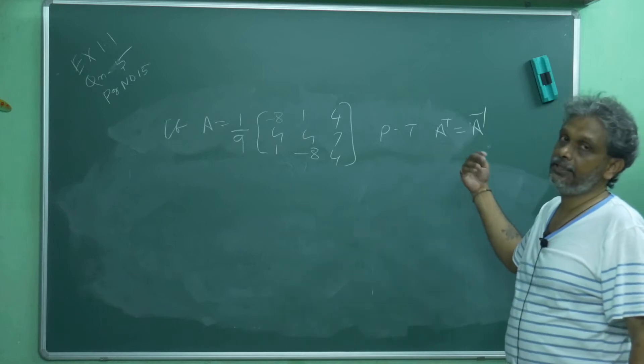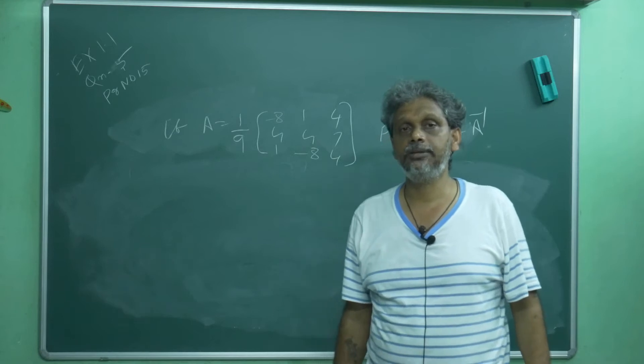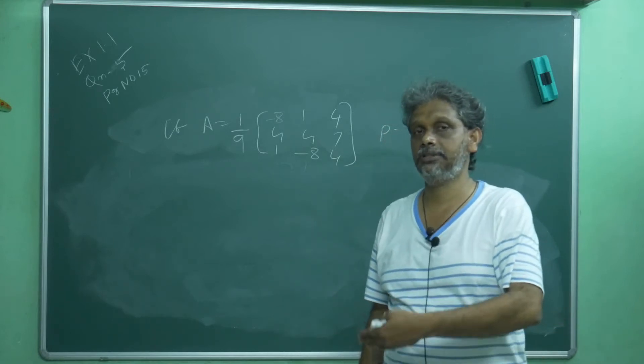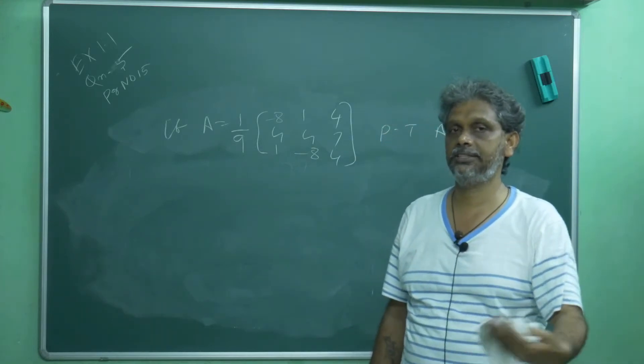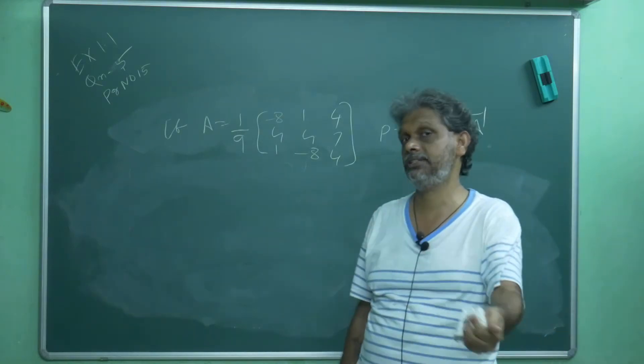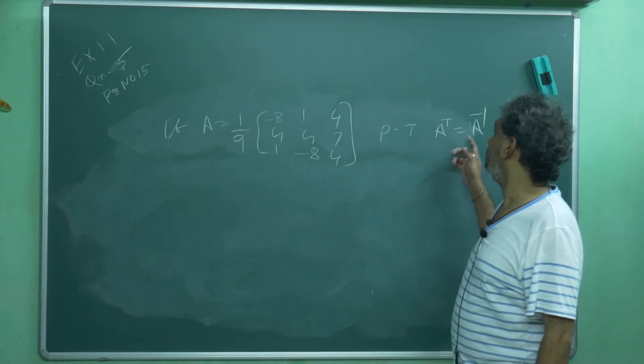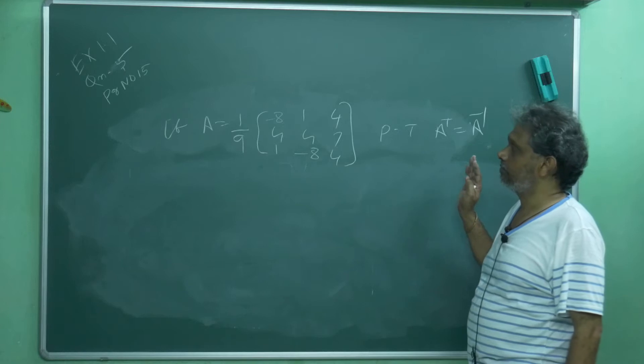A transpose is itself A inverse. The inverse definition is: A B is equal to I means B is A inverse or A is B inverse, vice versa. A B is equal to B A is equal to I. That is the definition of the inverse. So, it is enough to prove that A into A T is equal to I.